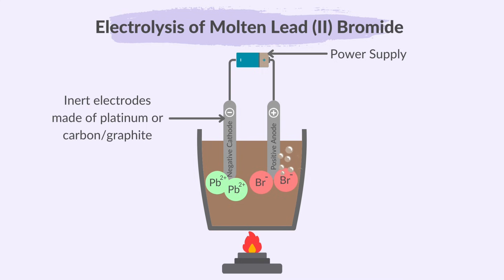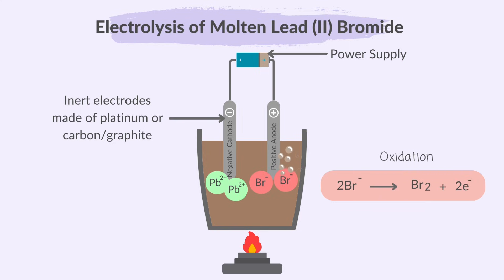At the anode, bromine gas forms and this is observed as brown gas bubbles. Each bromide ion releases one electron, resulting in the formation of bromine molecules. Two bromide ions are oxidized to form a bromine molecule. Lead forms at the cathode and this can be observed as a grey metal, molten lead, that accumulates on the electrode surface.